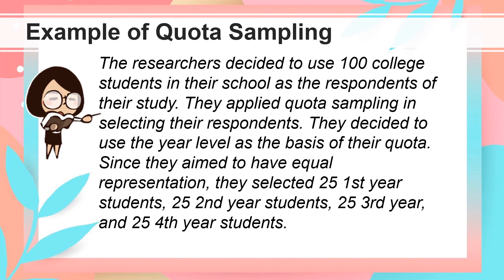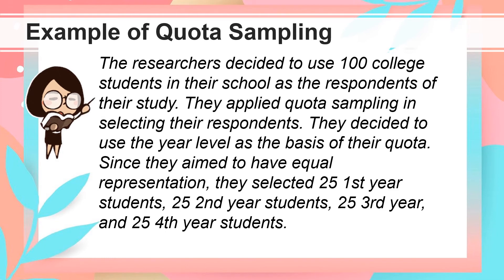Here's an example. The researchers decided to use 100 college students in their school as the respondents of their study. They applied Quota Sampling in selecting their respondents, and they decided to use year level as the basis of their quota. Since they aimed to have equal representation, they selected 25 first-year students, 25 second-year students, 25 third-year, and 25 fourth-year students.